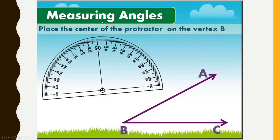Measuring angles: To measure angles we use a tool named protractor. The center point of the protractor is placed on the vertex, and the baseline is the 0-degree line. The protractor has two scales — from left to right, 0 to 180 degrees (the outer scale), and from right to left, 0 to 180 degrees (the inner scale).